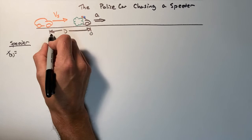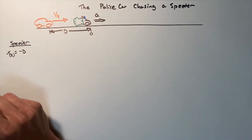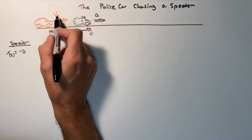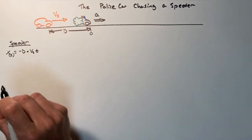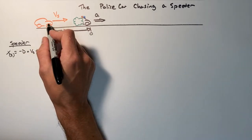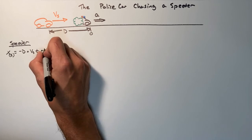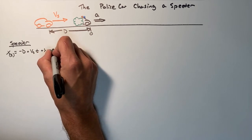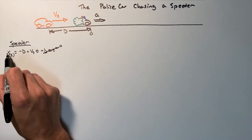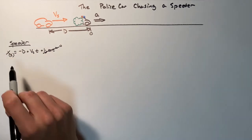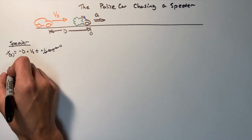The speeder's initial position is going to be negative d, and the velocity is v-sub-s, so we have negative d plus v-sub-s times t. There is no acceleration — the speeder moves at constant velocity — so the one-half times zero times t-squared term is zero. This gives us the position versus time function for the speeder.